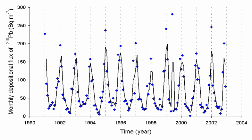Typical entry points of radon into buildings are cracks in solid foundations, construction joints, cracks in walls, gaps in suspended floors, gaps around service pipes, cavities inside walls, and the water supply. Radon concentrations in the same location may differ by a factor of two over a period of one hour. Also, the concentration in one room of a building may be significantly different from the concentration in an adjoining room. The soil characteristics of the dwellings are the most important source of radon for the ground floor, and higher concentration of indoor radon is observed on lower floors. Most of the high radon concentrations have been reported from places near fault zones.